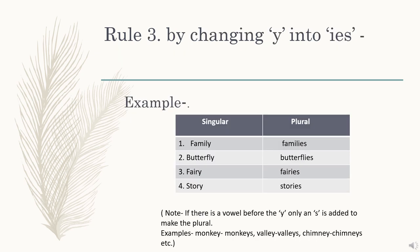Rule number 3: by changing y into ies. According to this rule, when we are making the plural form of a word which ends with y, we have to remove y and instead write ies. For example: family becomes families, butterfly becomes butterflies, fairy becomes fairies, story becomes stories. Note: if there is a vowel before the y, only an s is added to make the plural. For examples: monkey becomes monkeys, valley becomes valleys, chimney becomes chimneys, etc.